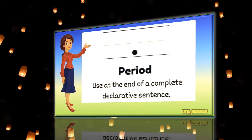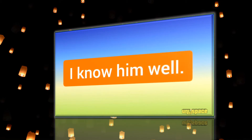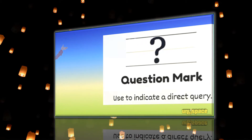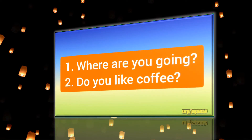Period — use at the end of a complete declarative sentence. Example: I know him well. Question mark — use to indicate a direct query. Examples: Where are you going? Do you like coffee?